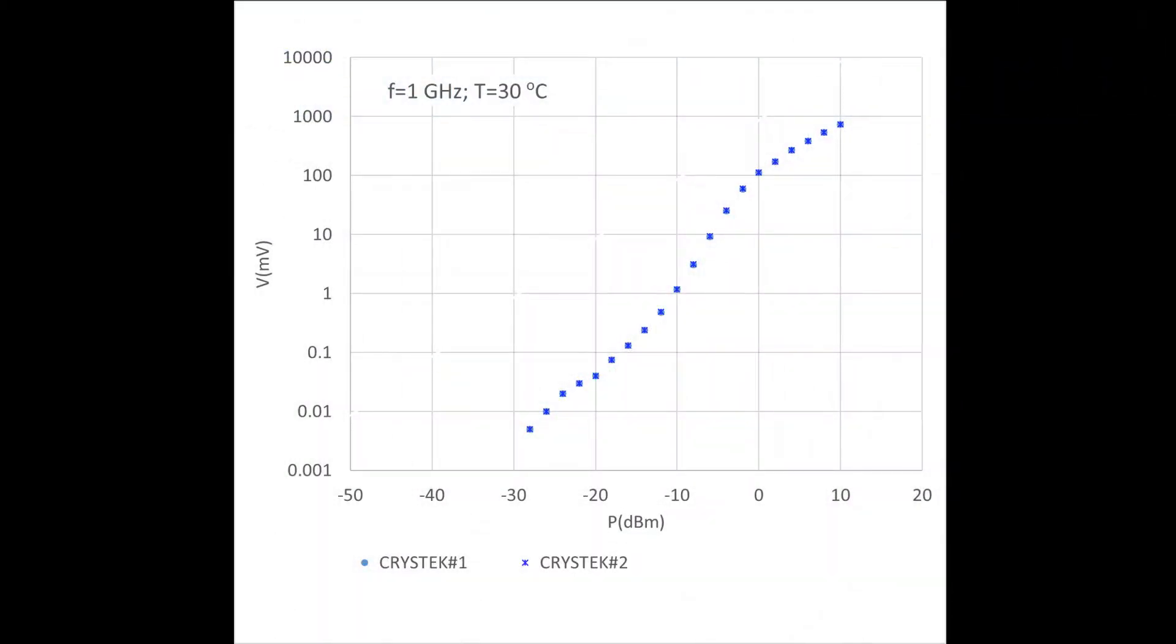This is the output voltage we measured with the Crystek diodes. The manufacturer provides measurements for input powers between minus 10 dBm and 10 dBm, which are in good agreement with our measurements. In addition, we can observe that the repeatability of the results is excellent. Both diodes provide nearly the same voltages. Let us compare these measurements with the theory.